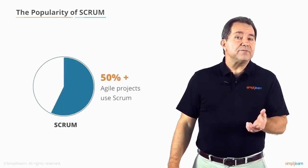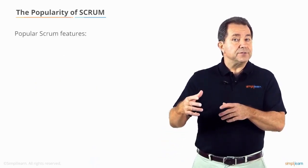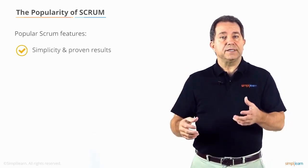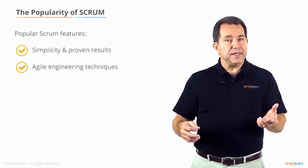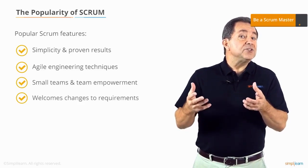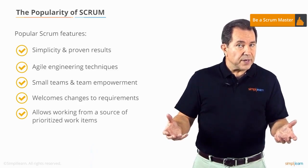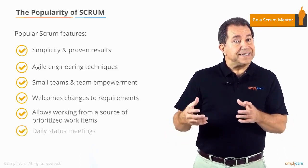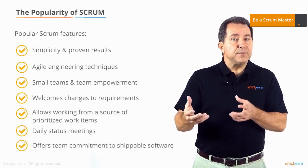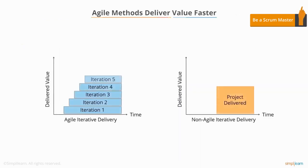Scrum is now the leading Agile method with more than 50% of Agile projects using Scrum. Features that make Scrum so popular include: it offers simplicity and proven results, it encompasses other Agile engineering techniques, it emphasizes small teams and team empowerment, it welcomes changes to requirements, it allows working from a single source of prioritized work items, it includes daily status meetings, and it offers team commitment to potentially shippable software at the end of each sprint. This chart illustrates how Agile methods deliver value faster.